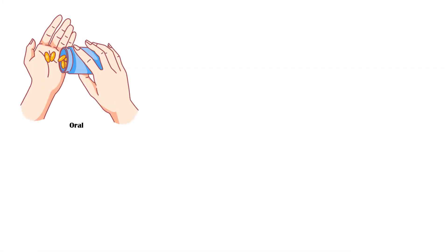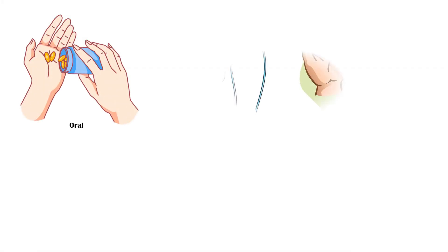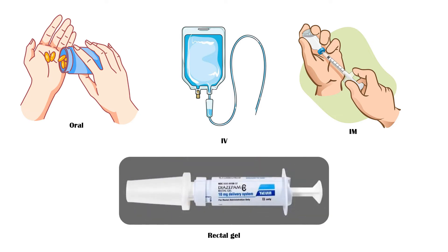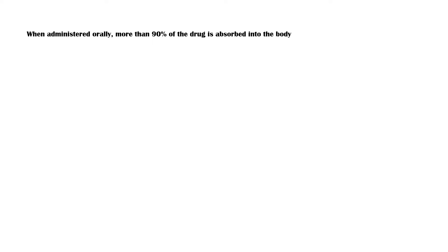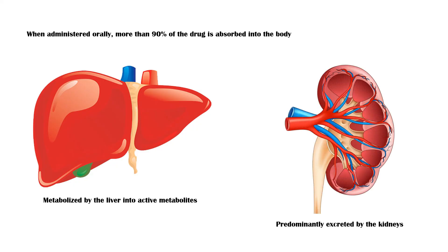Diazepam is available as an oral tablet, intramuscular and intravenous injections, and as a rectal gel. When administered orally, more than 90% of the drug is absorbed into the body. Diazepam is metabolized by the liver into active metabolites, which are predominantly excreted by the kidneys.